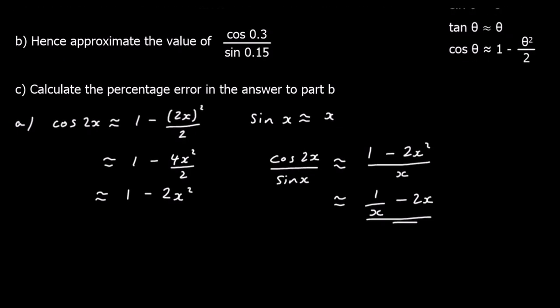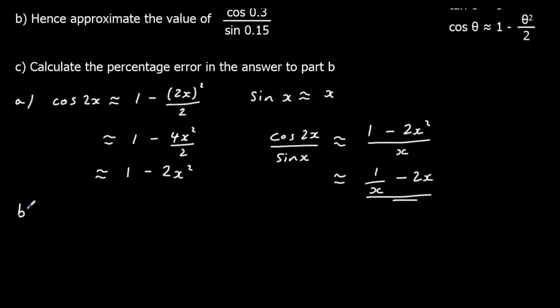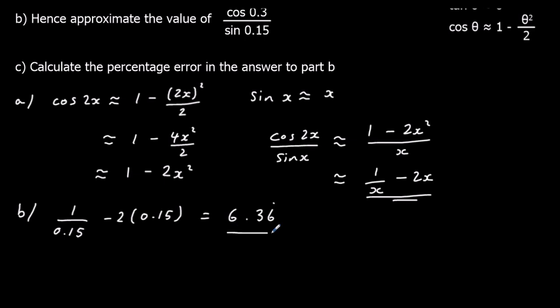Part B says: hence approximate the value of cos 0.3 over sin 0.15. We can see that x has been changed to 0.15. So for part B we're just going to substitute 0.15 in for x: 1 over 0.15 minus 2 times 0.15. Typing that into the calculator, we get an answer of 6.36 recurring. I'll store that in the calculator to use in part C.